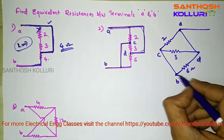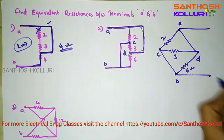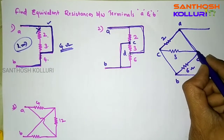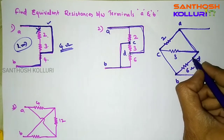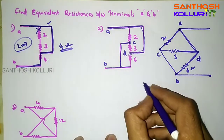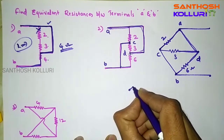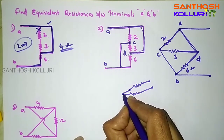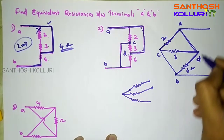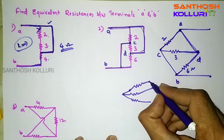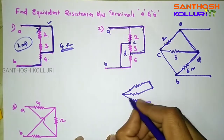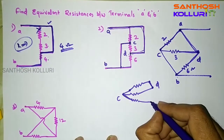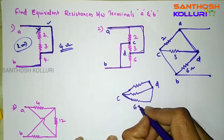We are calculating the equivalent resistance between terminals A and B from the redrawn diagram. Redrawing further: the 2 ohm resistor, then the 3 ohm resistor, then the 6 ohm resistor. Since point A and point D are the same, they can be short circuited. And since point C and point B are the same, they are shorted. The 6 ohm resistor is between C and D.